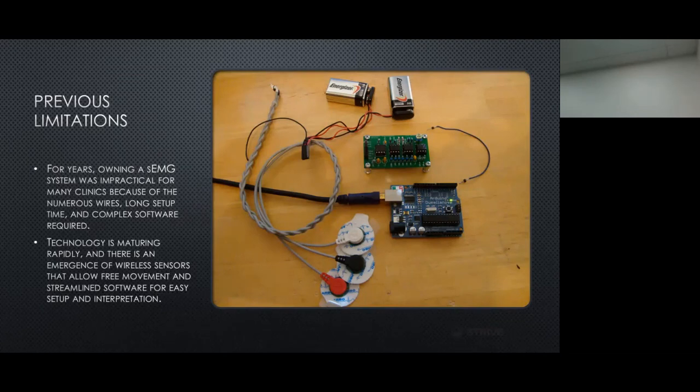For years, owning an EMG system was impractical for many clinics due to numerous wires, long setup times, and complex software. Traditional EMG sensors required the individual to be stationary — perhaps able to do squats and lunges, but confined to a specific area. However, technology has been maturing rapidly, and there has been an emergence of wireless sensors that allow free movement and streamlined software for easy setup and interpretation.